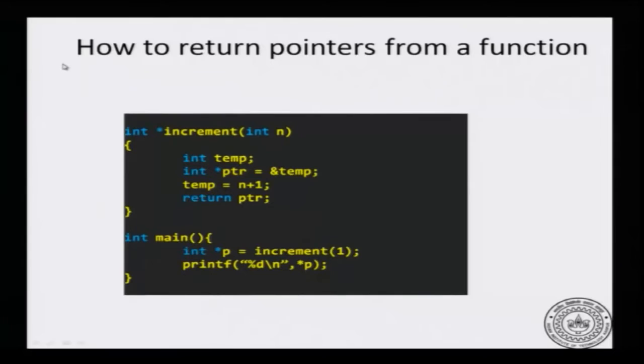You know that any variable can be passed as an argument to a function, can be declared as a local variable within a function, and can also be returned from a function. We have already seen in the case of the swap function how we pass pointers to a function. I have written a very silly function here — you do not need a function to do this, but this illustrates a point.